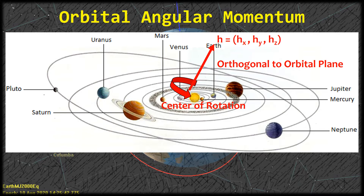For two-body problems, this should be a constant vector. However, for more complicated missions — maybe multi-maneuver missions — it might vary. So you might actually need to do this multiple times to find the top-down view of different orbits on different parts of the mission.